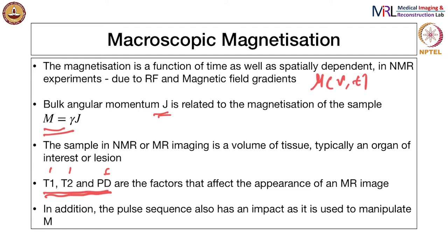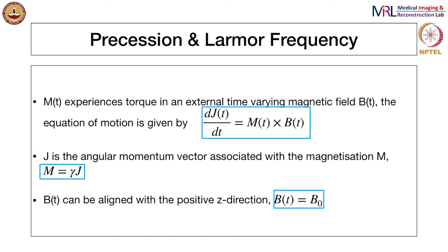The pulse sequence determines which one of these contrasts is contributing more to the image. When you apply a static magnetic field, we know that there is a spin angular momentum for individual nuclei and there is also this bulk angular momentum J.